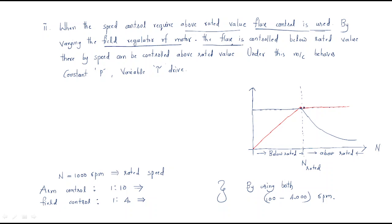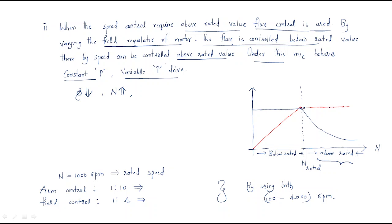When the flux value decreases below the rated value, the speed can be controlled above the rated value — that means speed will increase above the rated value. Under this condition, the machine behaves as a constant power and variable torque device. This is generally the above-rated value condition: if the speed is more than the rated value, this applies.